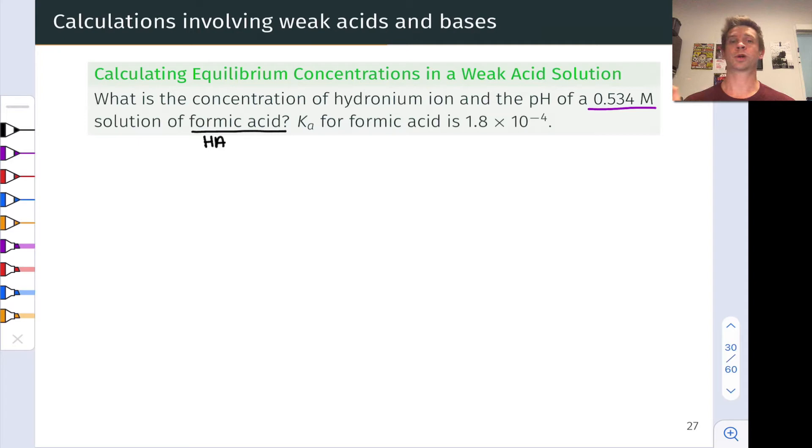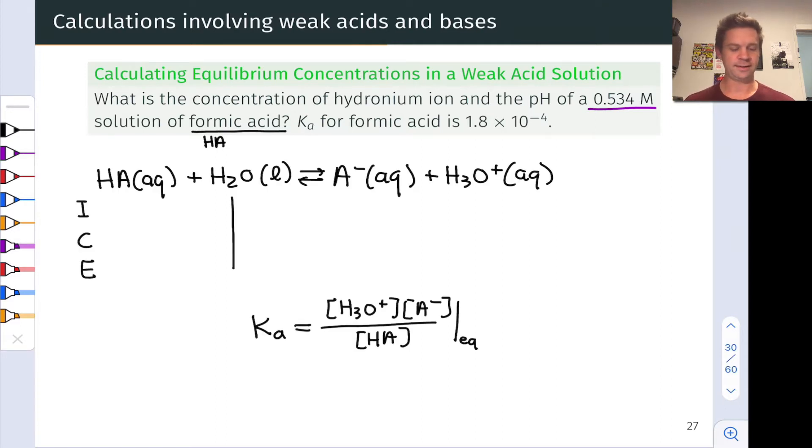First, we'll lay down that ICE table with the chemical equation for acid ionization at the top. Here it is: HA reacts with water to form A minus and H3O plus reversibly.